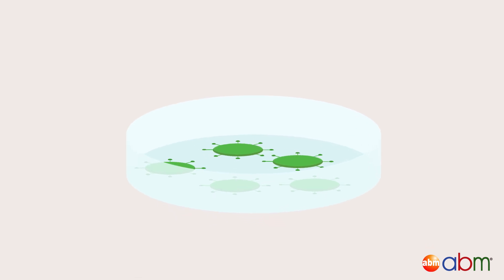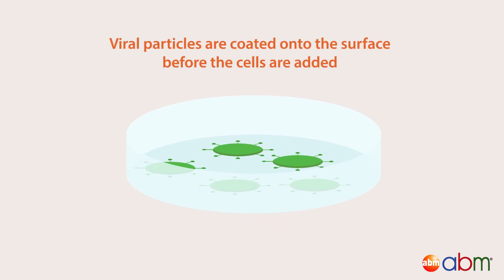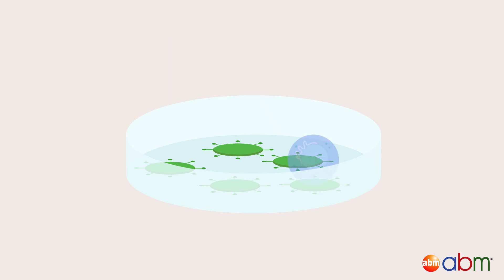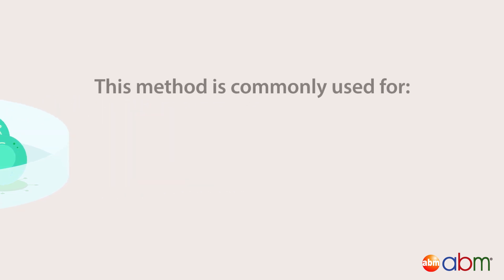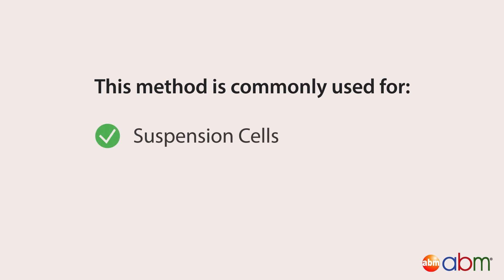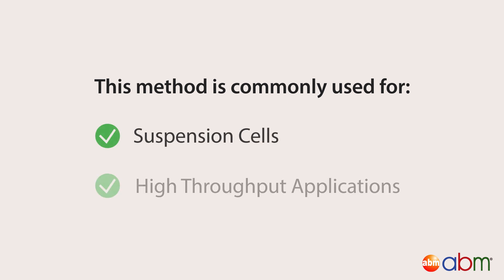The reverse transduction method is another approach that can improve overall transduction efficiency. In this method, viral particles are first coated onto the culture vessel surface before the cells are added, allowing for transduction of cells during cell attachment. This method is commonly used for suspension cells or high-throughput applications.